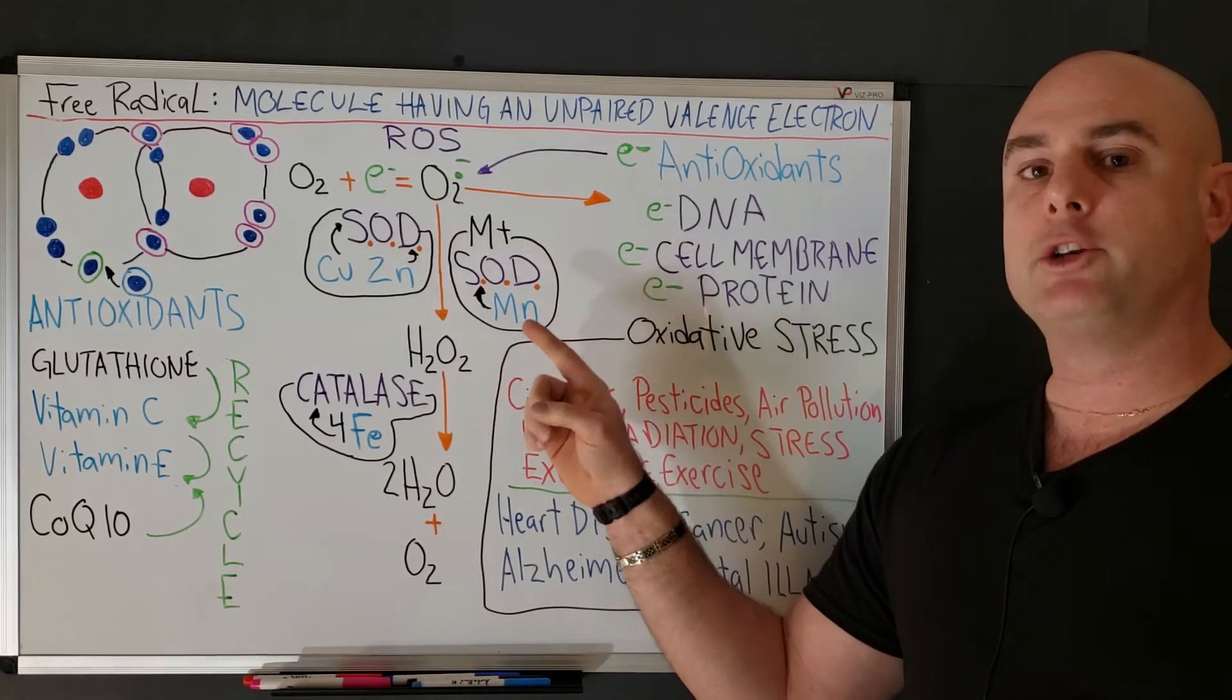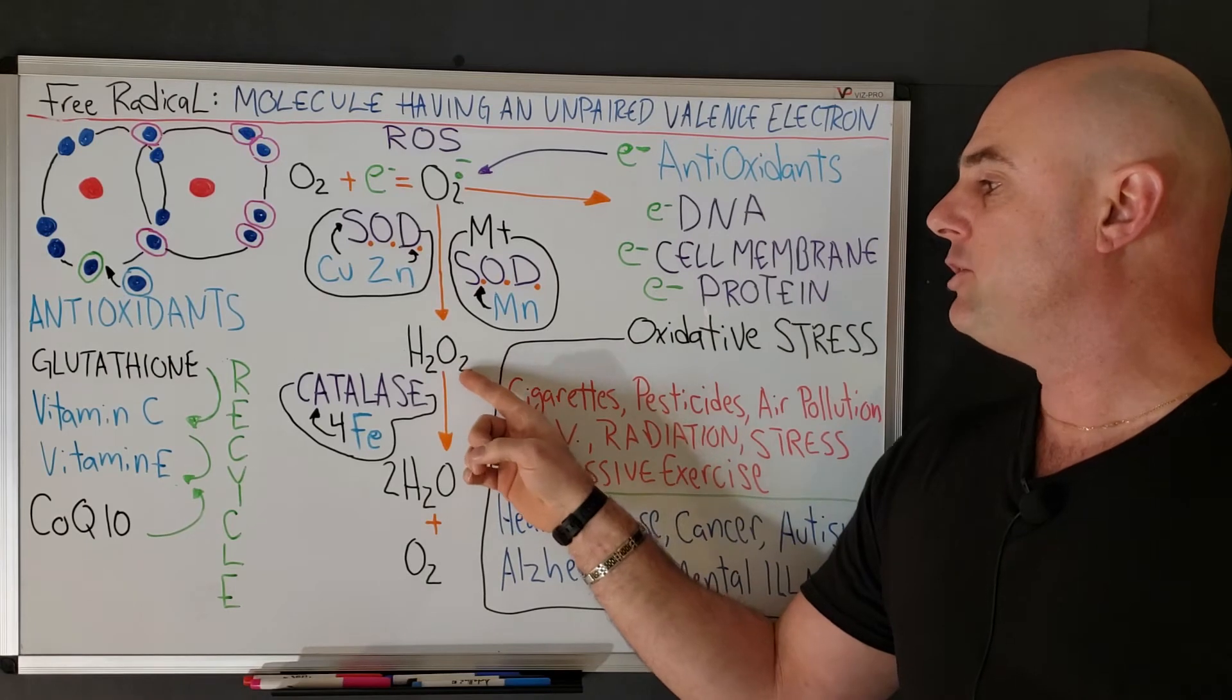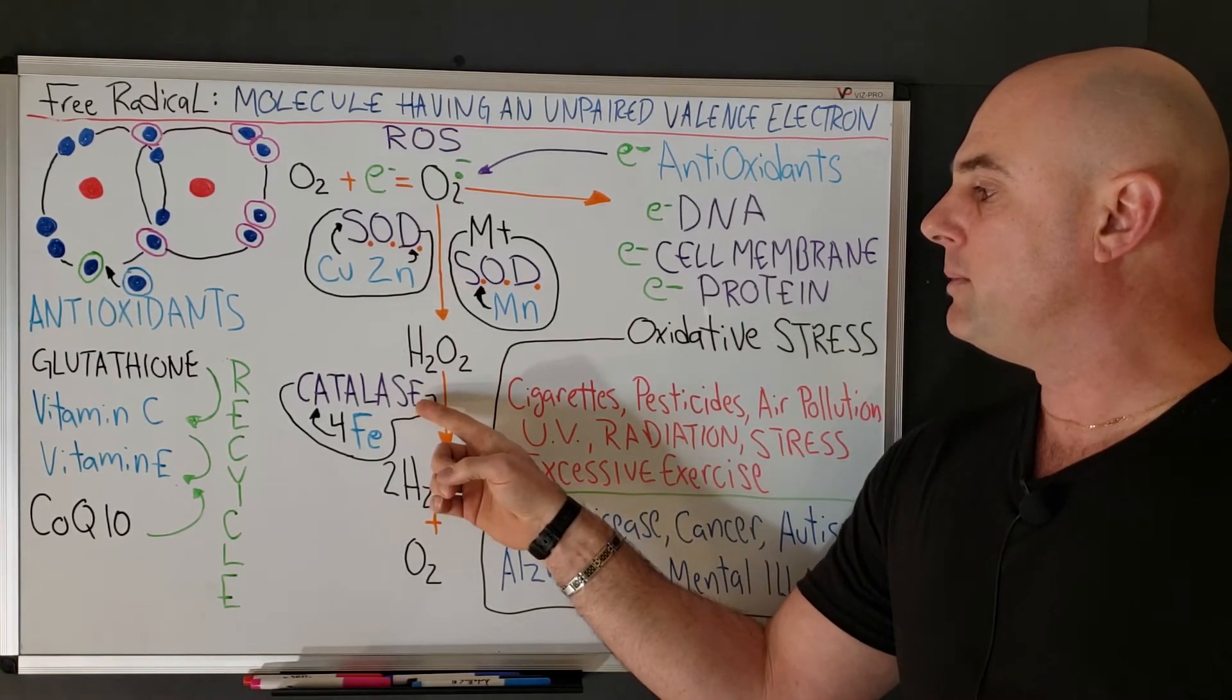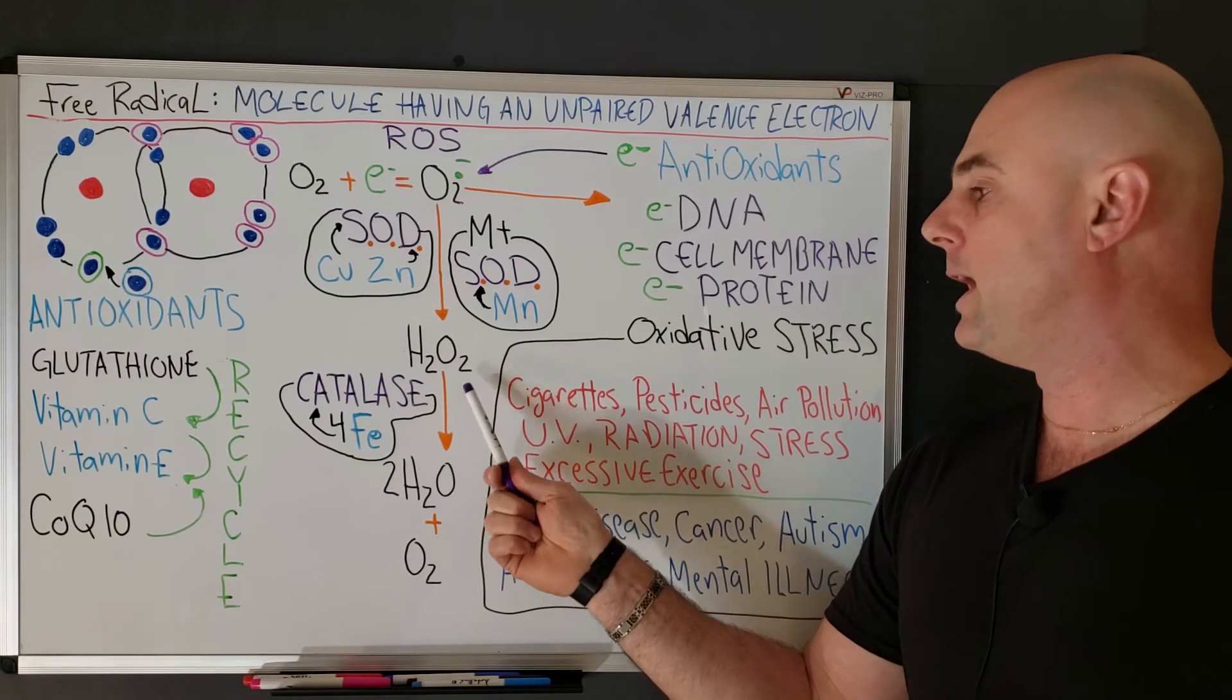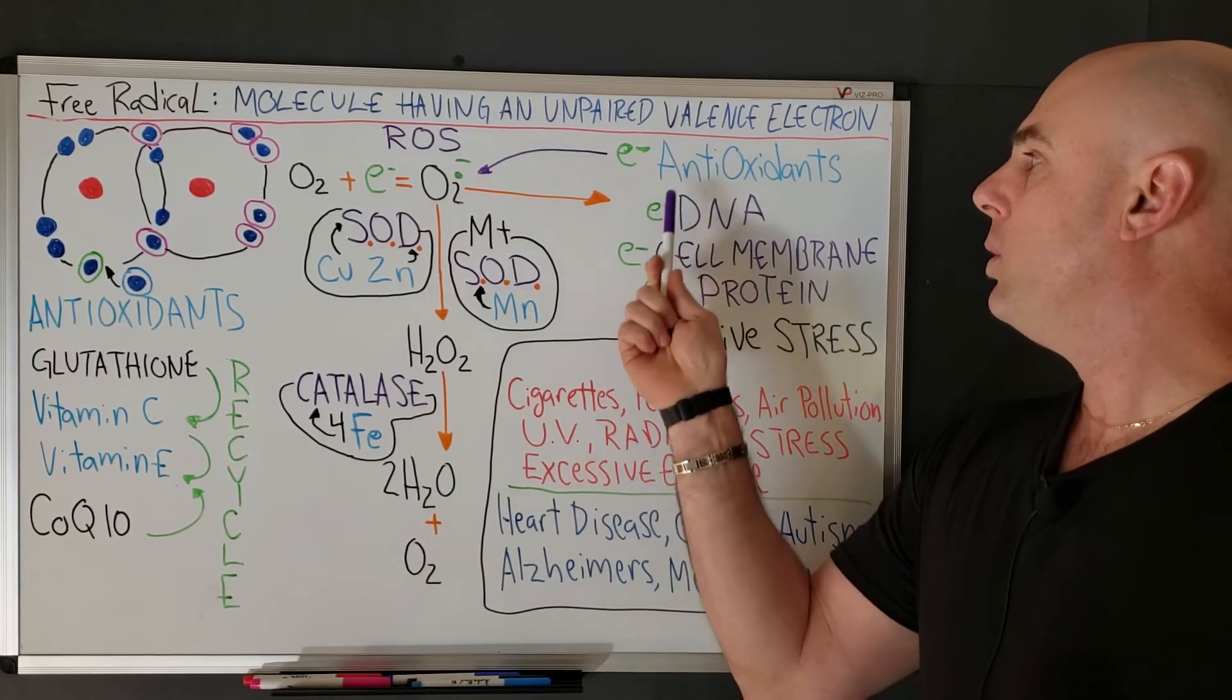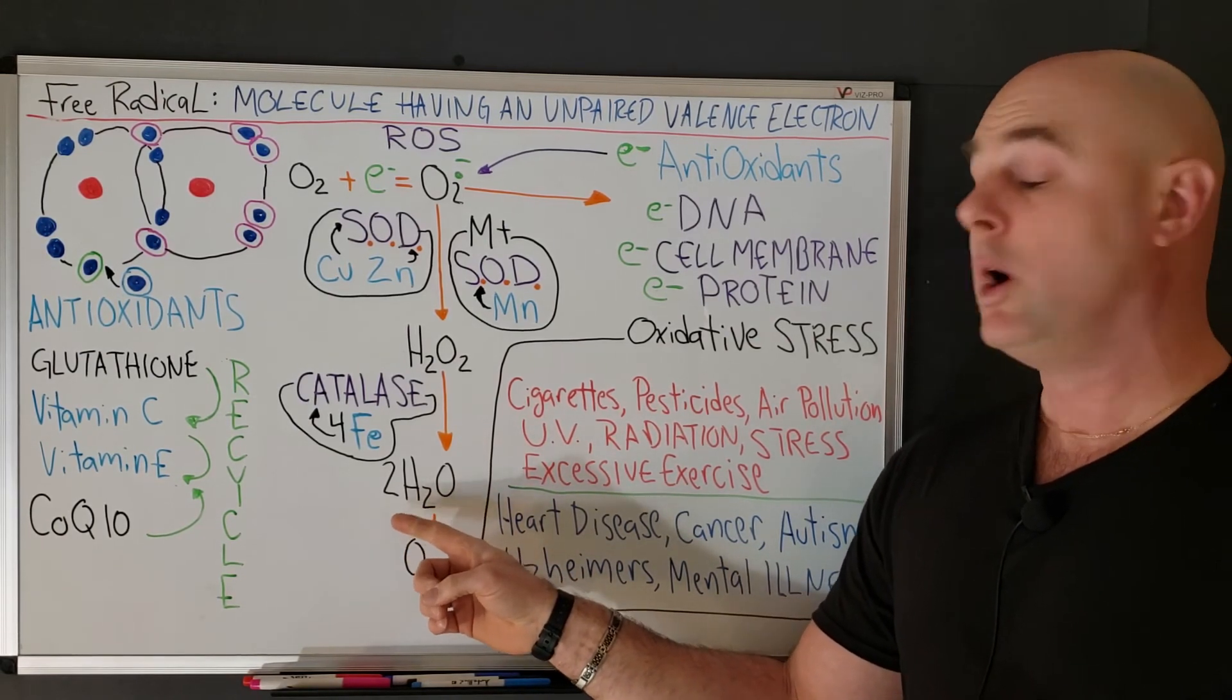Our mitochondria has a superoxide dismutase that is also able to convert this superoxide, which is a free radical, into hydrogen peroxide. From hydrogen peroxide, we have an enzyme called catalase. We have this enzyme catalase that requires four atoms of iron, and this catalase can convert hydrogen peroxide into two molecules of water and oxygen. So we have two ways to safely remove or neutralize free radicals: one by antioxidants, and the other way is this two-enzyme punch that can safely convert these radicals into water and oxygen.